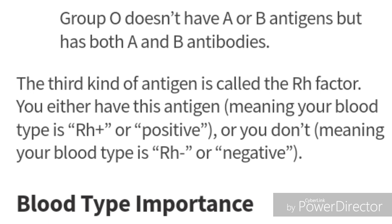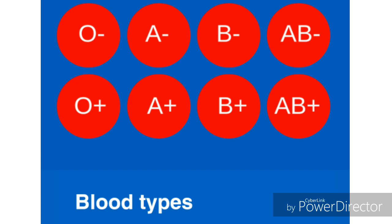In addition to normal antigens and antibodies in your blood, another antigen called the RH factor is present in 90% of the Indian population. RH stands for Rhesus. If this RH factor is present in your blood, your blood group gets a positive sign.